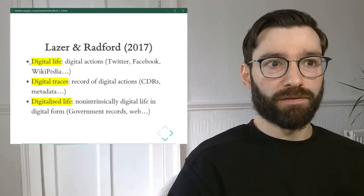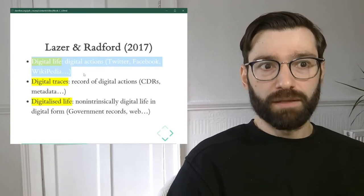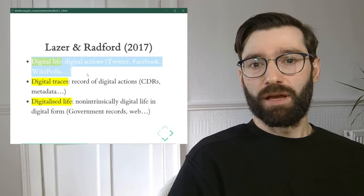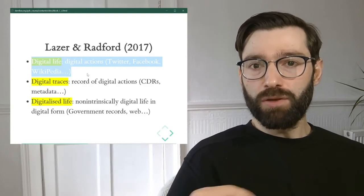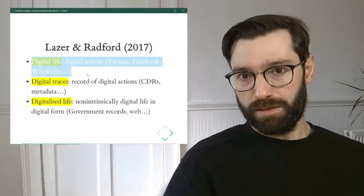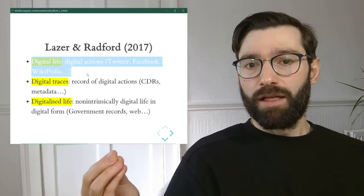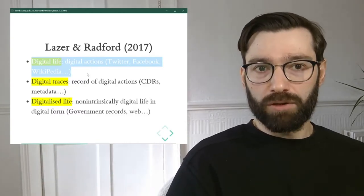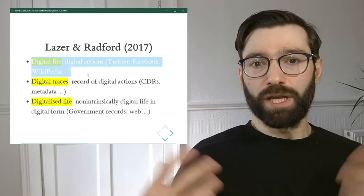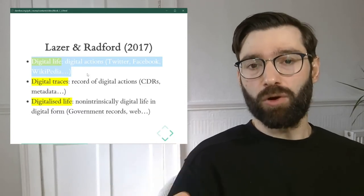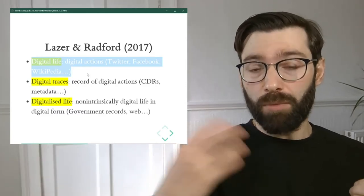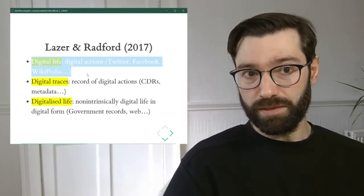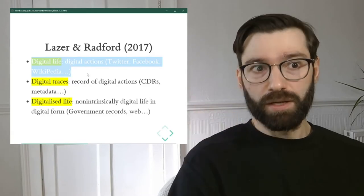The first type is this idea of digital life — data that records things and activities that we do in digital spaces. These are activities that couldn't happen without Twitter, without Facebook, without Wikipedia, because they basically record our life as we go about and coexist in these new virtual spaces.